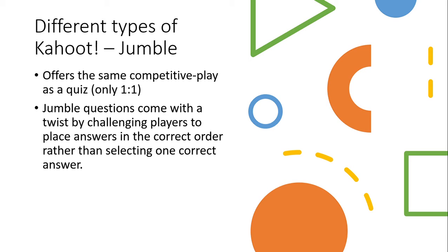You also have Jumble, which offers the same competitive play as a quiz but on a one-on-one basis. Jumble questions come with a twist by challenging players to place answers in the correct order rather than selecting one correct answer. In the quiz mode, you can do multiple-choice questions or type-in answer questions, so students can type their answer and it'll send it to the smart board where you'll see their responses as they come in.